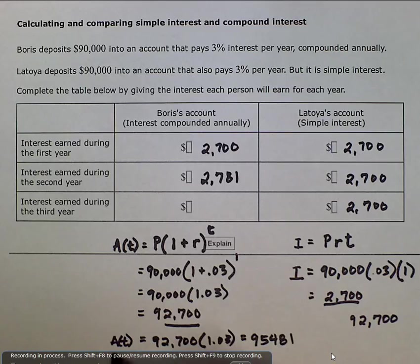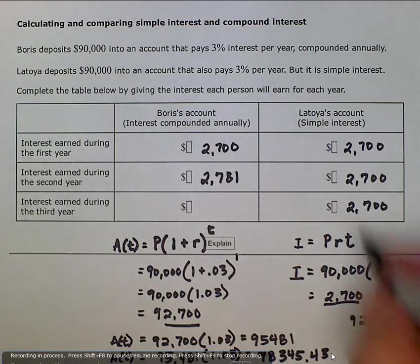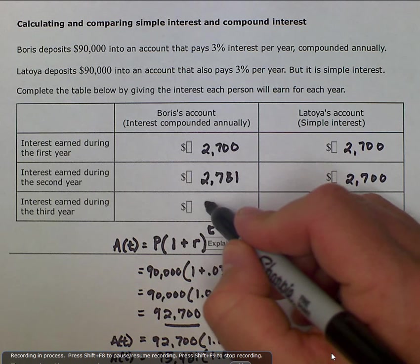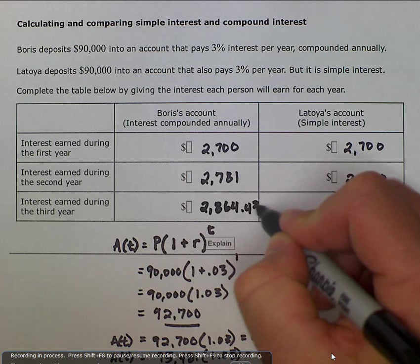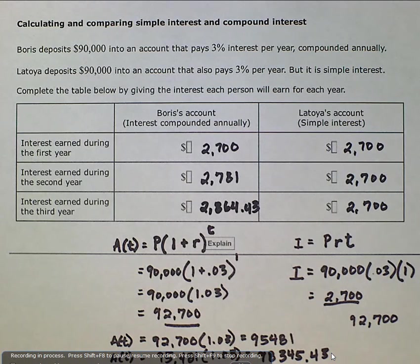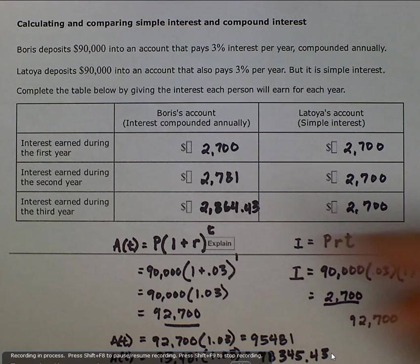If we're to do that again, and we consider the new amount, 95,481 times my 1.03 is going to be equal to 98,345.43. And then when we subtract our 95,481 from this, we get a difference of 2,864.43. So you notice that as the years go up, the amount that Boris is earning also goes up.